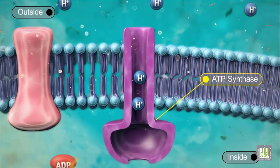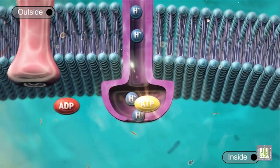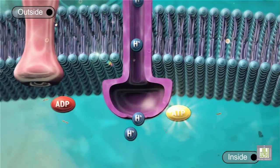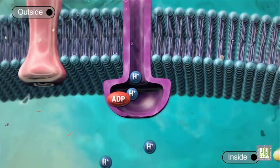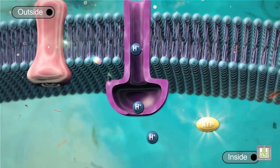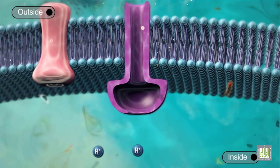This enzyme uses the energy derived from the movement of these protons to convert ADP into ATP. The movement of protons down a concentration gradient provides the energy for ATP synthase to form ATP. This mechanism of producing ATP is called chemiosmosis.